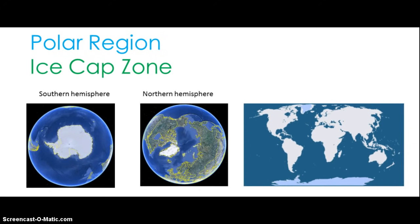Ice cap climate is only located near the poles but covers nearly 20% of the earth. This is the most extreme climate on earth, mainly found in Antarctica and the land around the Arctic Ocean, especially Greenland. In the Southern Hemisphere it is centered on the South Pole; in the Northern Hemisphere, on the North Pole. Since the ice cap zone is at the poles, it has extreme seasons. There isn't a traditional summer since temperatures almost never go above freezing. However, there are two seasons determined by the amount of light. During summer, there are nearly 24 hours of light since the pole is pointed toward the sun. During winter, the pole faces away from the sun, causing nearly 24 hours of darkness.